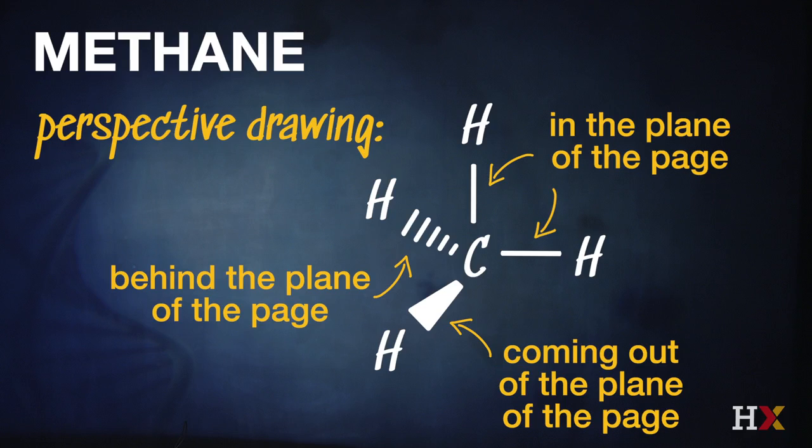So that perspective drawing is something we can sketch with a pen and paper, but it captures the same information that's in that ball and stick diagram. It's very important.